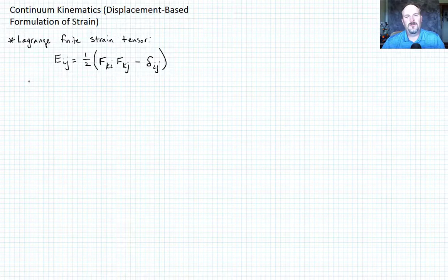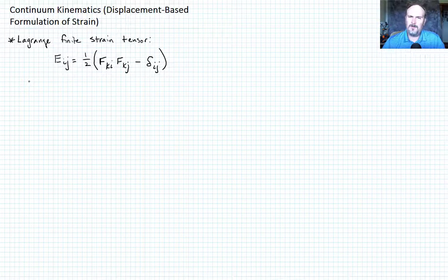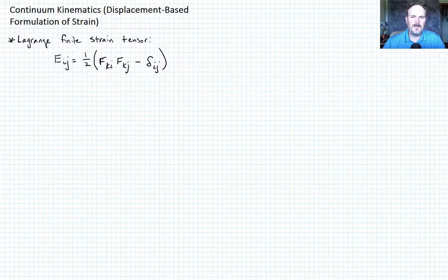Okay, so we've talked a lot about the Lagrange finite strain tensor and a little bit about what it means. I'm giving you here the definition as we created originally. So the E_ij, that's the Lagrange finite strain tensor, is equal to one half times F_ki F_kj minus delta ij. Remember that F is the deformation gradient tensor.